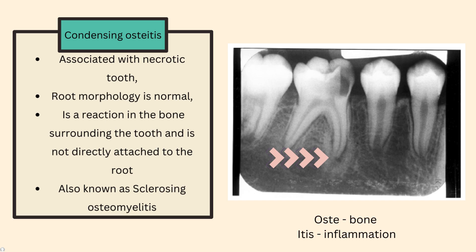Condensing osteitis, as the name suggests, is a reaction in the bone surrounding the tooth and is not directly attached to the root. Because 'oste' means bone and 'itis' means inflammation. So it is an inflammation involving the bone surrounding the root, not within the tooth itself. The bone surrounding the root has an infection, which led to condensing osteitis.